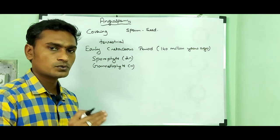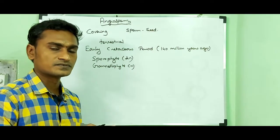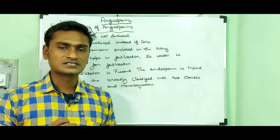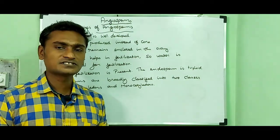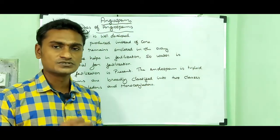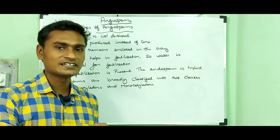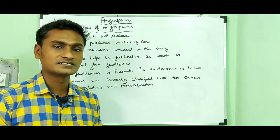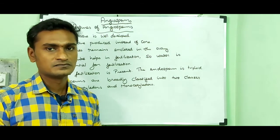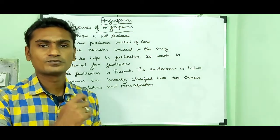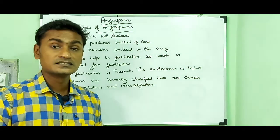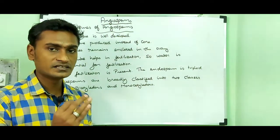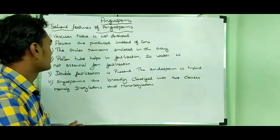Now I am going to tell about the general characteristic features of angiosperms. The first point: vascular tissue is well developed. That means the xylem and phloem are well developed. In xylem, it contains xylem vessels. In the case of phloem, it contains sieve tubes and companion cells. So vascular tissues are well developed in angiosperms.